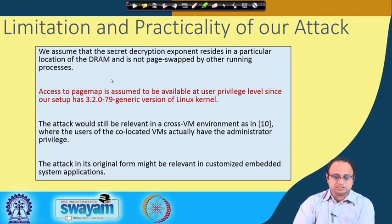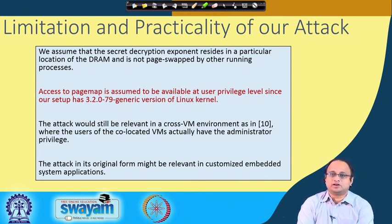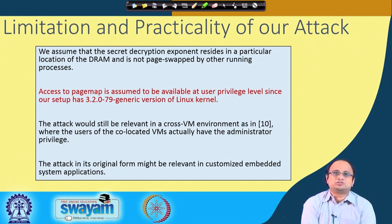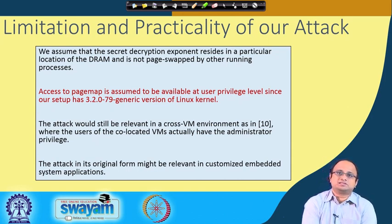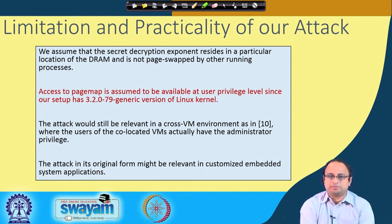This attack assumes that the secret decryption exponent resides in a particular DRAM location and is not page-swapped to disk. This is a quite practical assumption in several settings. Access to the page map is not available at user privilege, but in several scenarios it may still be enabled, and there may be other ways of obtaining a handle on the physical address. In a cross-VM environment where co-located VM users have administrator privilege, this page map can potentially still be used to conceptualize an attack.